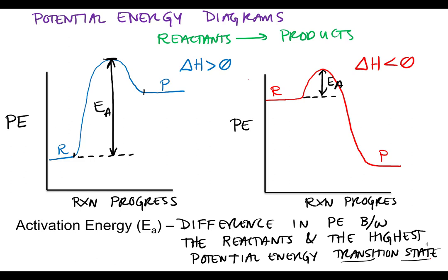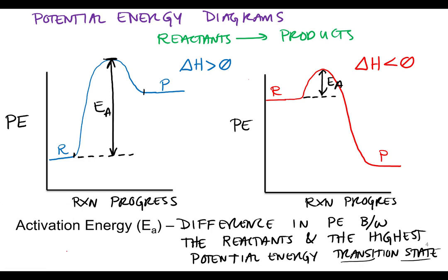For these potential energy diagrams, we can also determine the enthalpy change for the reactions. The enthalpy change is the difference in potential energy between the reactants and products. For the endothermic reaction, it's the difference in potential energy from reactants to products — a positive value. For the exothermic reaction, we're going down in potential energy, so it is a negative value.